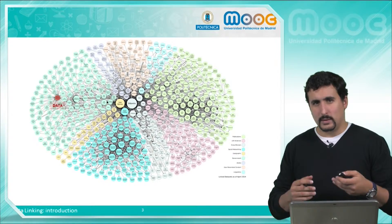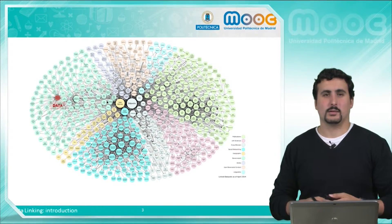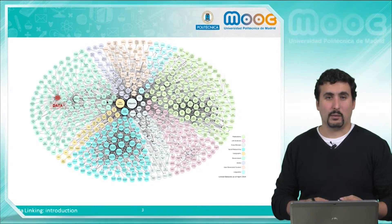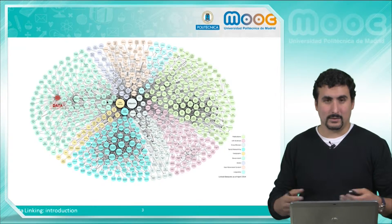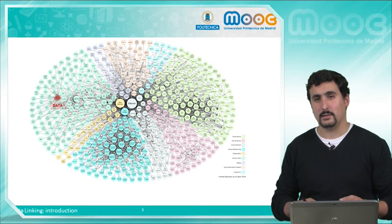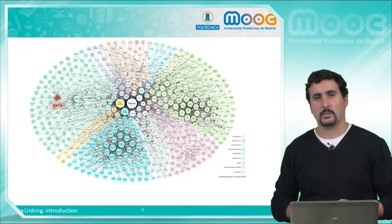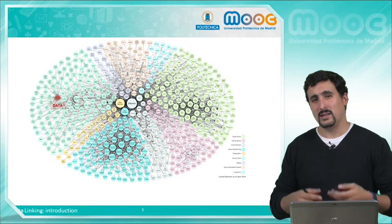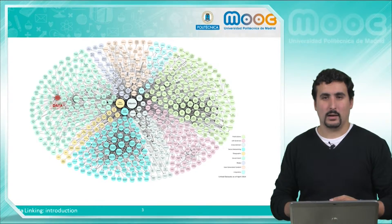We have to identify links between our data and other data sources. What we see here in this picture is the Linked Open Data Cloud, a graphical representation of the most representative linked datasets. Each bubble on the image corresponds to a dataset and each arrow denotes links between them. This version of the LOD Cloud corresponds to 2014, as today's version is simply too large to be rendered.